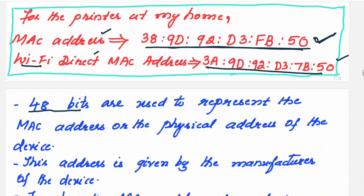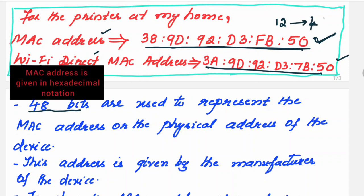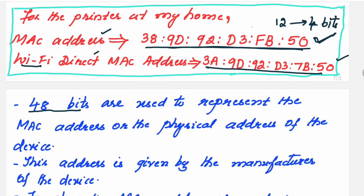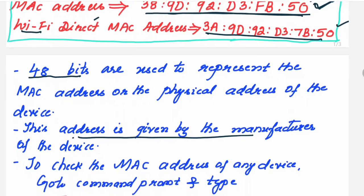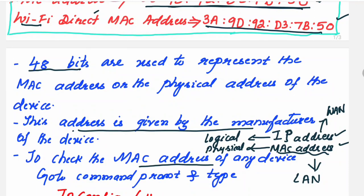48 bits are used to represent the MAC address. If you look at it, there are twelve hexadecimal digits, and each digit is four bits — so twelve times four equals 48 bits. This MAC address is printed in hexadecimal. This address is assigned by the manufacturer of the device, so by any means you cannot change the MAC address — it is unique and fixed by the manufacturer.